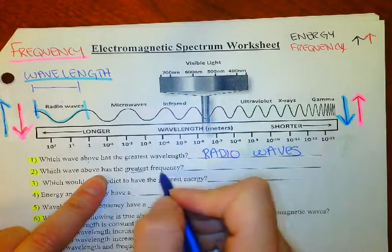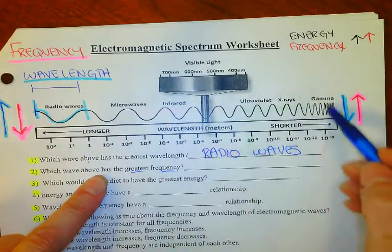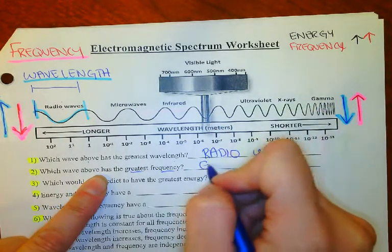Now it's asking me which one has the greatest frequency. So this one doesn't repeat very frequently, but over here we've got lots of repeating stuff. So greatest frequency will be over here for gamma rays.